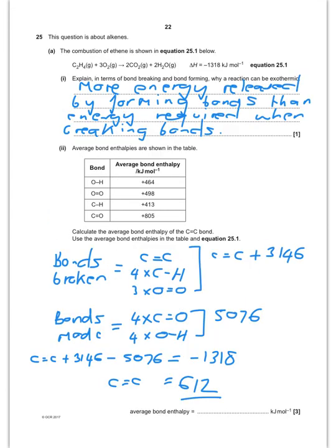Question 25 now. Explain in terms of breaking a bond forming why the reaction is exothermic. This question comes up quite a lot actually. Well more energy must be released by forming the bonds than energy required when breaking the bonds for it to be overall exothermic.